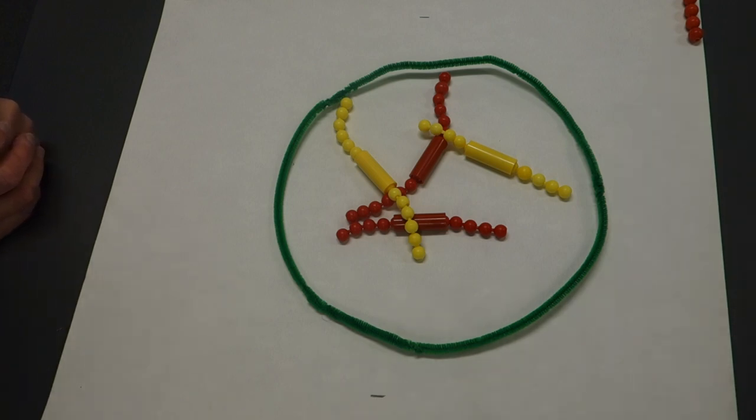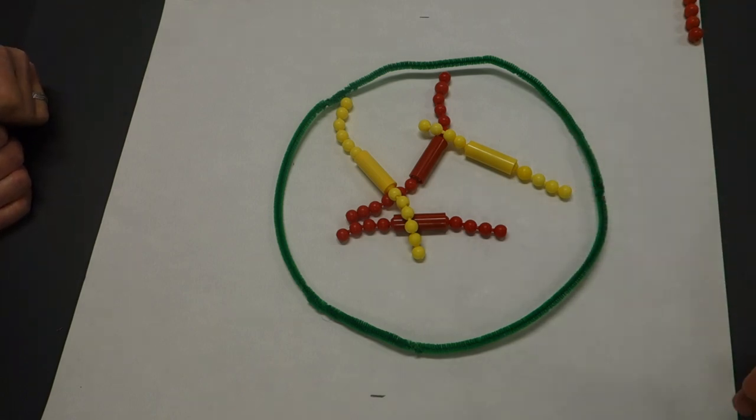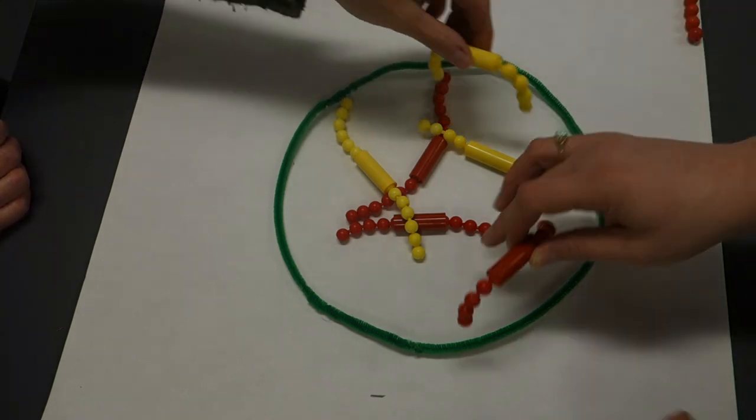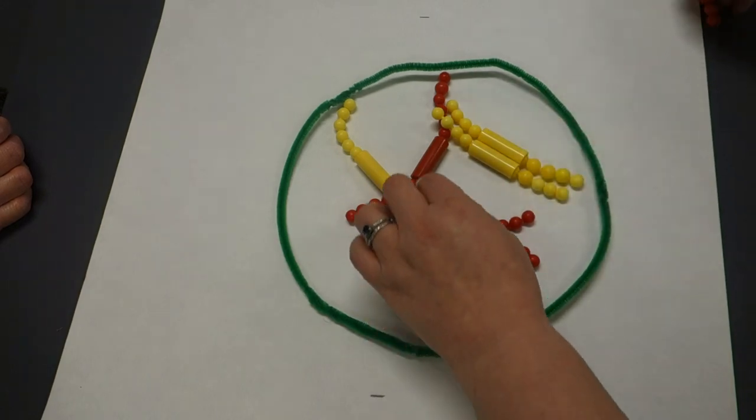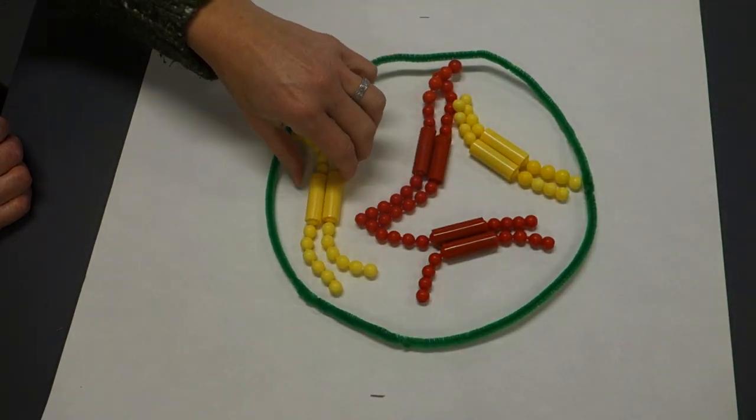If this cell gets the signaling to move into mitosis, it will go from gap one into the S phase, or what's called the synthesis phase. So during the synthesis phase, we're going to take our four single chromosomes and our cell is going to replicate it. So littles get their pairs, bigs get their pairs, and we now have a jumble of DNA.